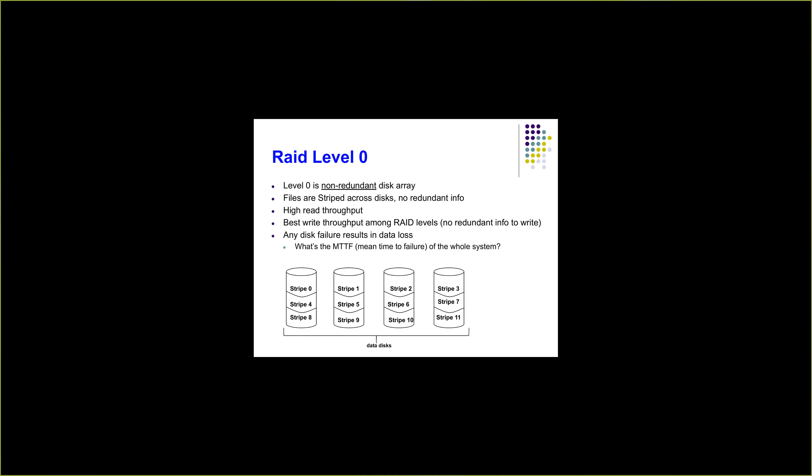In RAID level 0, read throughput is maximum because reads are parallel — three consecutive blocks can be read simultaneously since they are stored in three different disks. Write throughput is also maximum since parallel writes are possible. There is no redundant info, so disk utilization is maximum. However, reliability is zero — there is no way to recover any data if one of the disks fails.